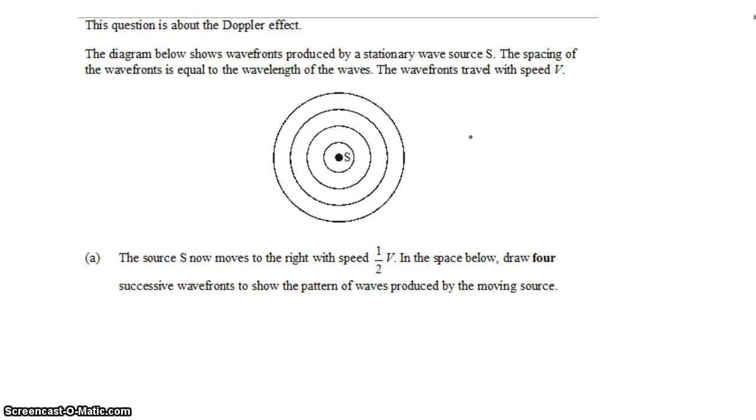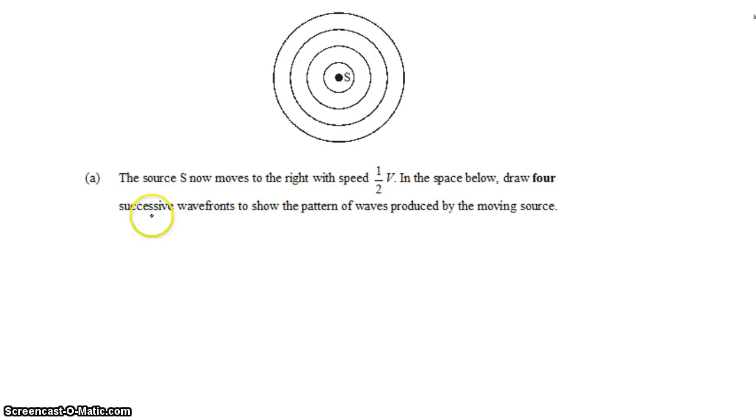That's like a photograph of the pattern, and over time we can expect the pattern to grow in size while new rings will be formed in the center. For part A, it says that the source now moves to the right with a speed of half the velocity of the waves. That's significant compared to the waves themselves. In the space below, we want to draw four successive wavefronts to show the pattern of the waves produced by the moving source.